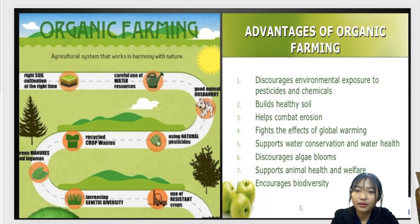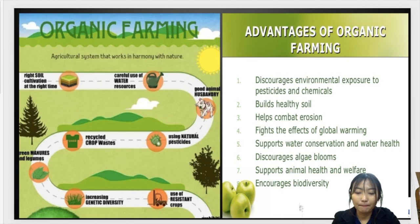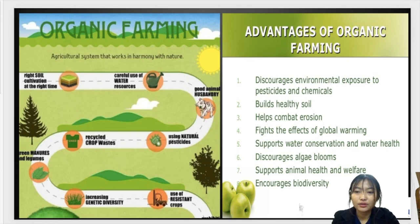Moving on to the advantages of organic farming: the first is it discourages environmental exposure to pesticides and chemicals. Second, it builds healthy soil through tillage practices, crop rotation, and cover crops, making soil more porous and healthier, thus helping combat erosion. The fourth advantage is it fights the effects of global warming.